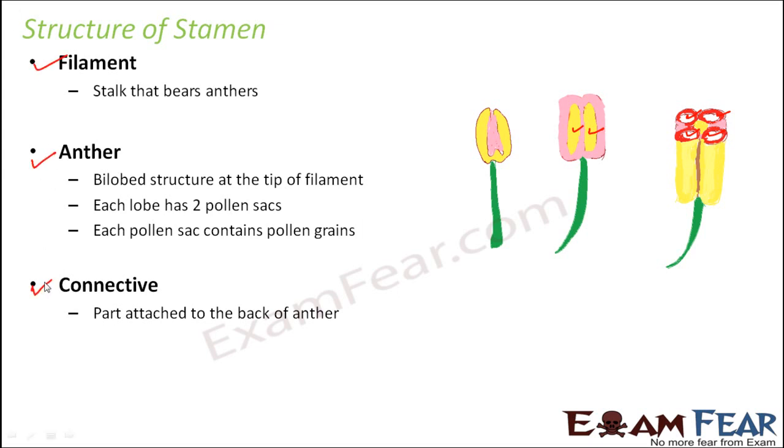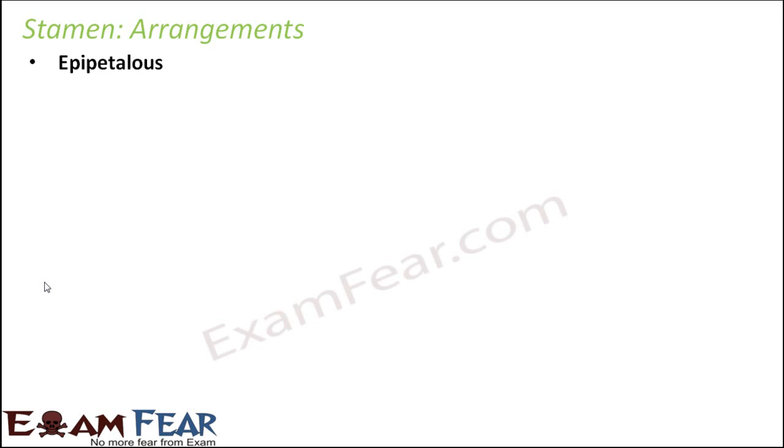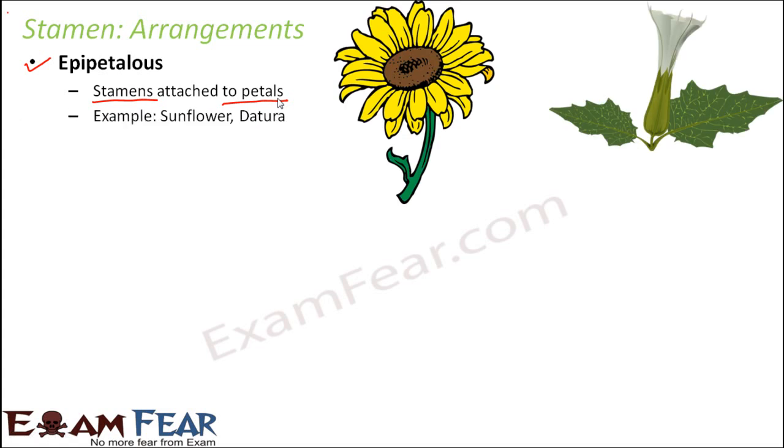Stamen can be arranged in many different ways in a flower, and based on those arrangements, specific terminologies have been introduced. The first type is epipetalous, which means stamen attached to the petals. The petals are the colored structures, and the stamen are attached to them. Examples include sunflower and datura.